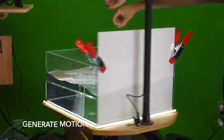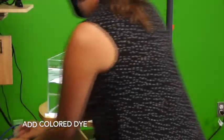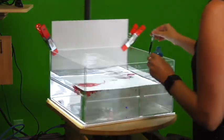We now generate motion by again just swishing around the water, not imparting any particular direction of motion, and adding colored dye to visualize the flow.